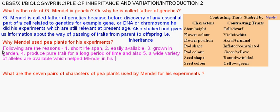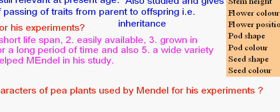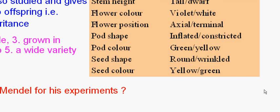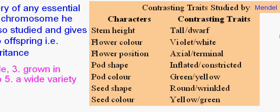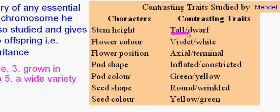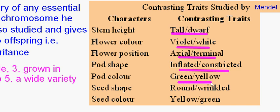The seven pairs of contrasting characters of pea plants used by Mendel for his experiments are: stem height — tall or dwarf; flower color — violet or white; flower position — axial or terminal; pod shape — inflated or constricted; pod color — green or yellow; seed shape — round or wrinkled; and seed color — yellow or green. These are the seven pairs of contrasting characters used by Mendel.